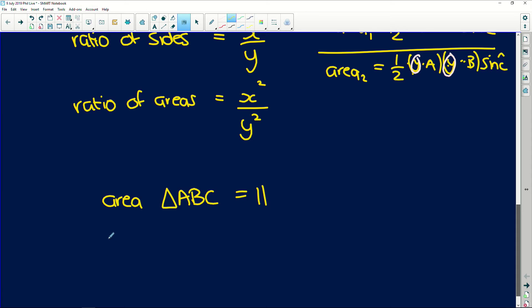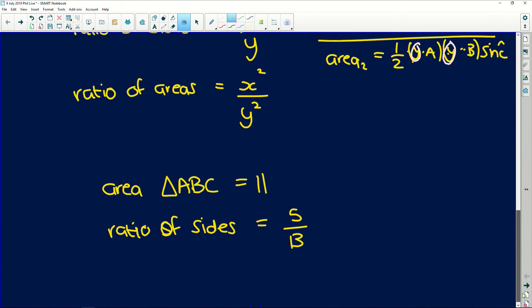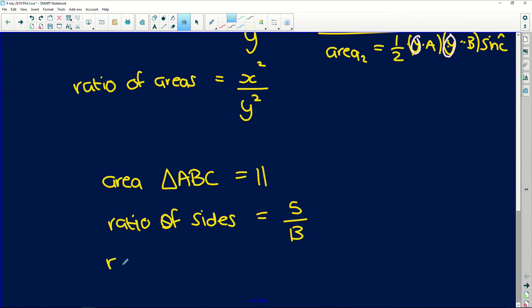Okay, and the ratio of the sides was given to us, ratio of the sides is equal to 5 over 13. Because remember over here, AC over CD is 5 over 13. So the ratio of the sides is 5 over 13, so the ratio of the areas is going to be 5 over 13 squared, which is 25 over 169.